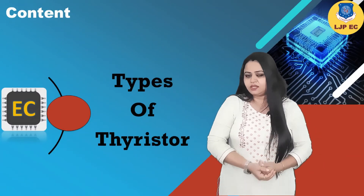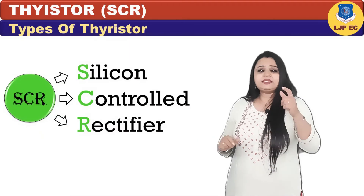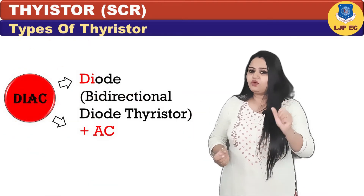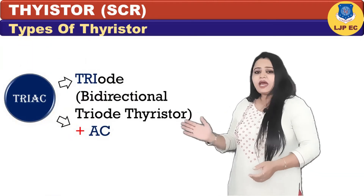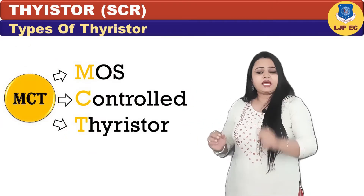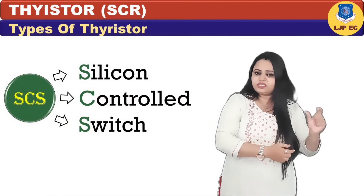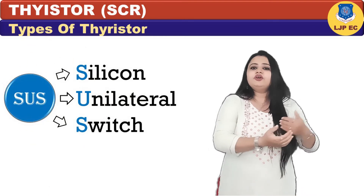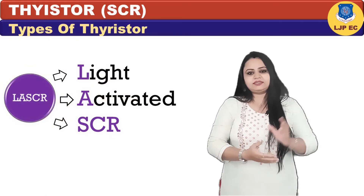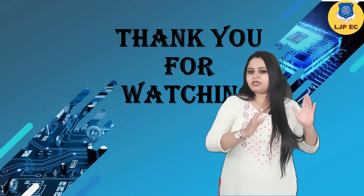Now let us see the types of thyristors. The devices that come under the thyristor family are: SCR — silicon controlled rectifier; DIAC — bidirectional diode thyristor plus AC; TRIAC — bidirectional triode thyristor plus AC; MCT — MOSFET controlled thyristor; SCS — silicon controlled switch; SUS — silicon unilateral switch; and LASCR — light activated SCR.